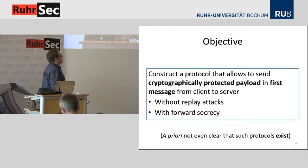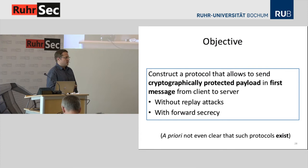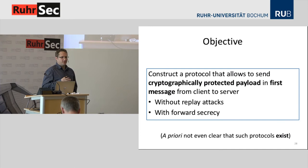Our objective is to construct a protocol which allows sending cryptographically protected payloads in the very first message from client to server, in a way that prevents replay attacks and achieves forward secrecy at the same time. It's not even obvious that such a protocol exists at all. In fact, in the discussion on TLS 1.3, many people said it would actually be impossible to combine forward secrecy and zero-round-trip-time because they seem to contradict each other.